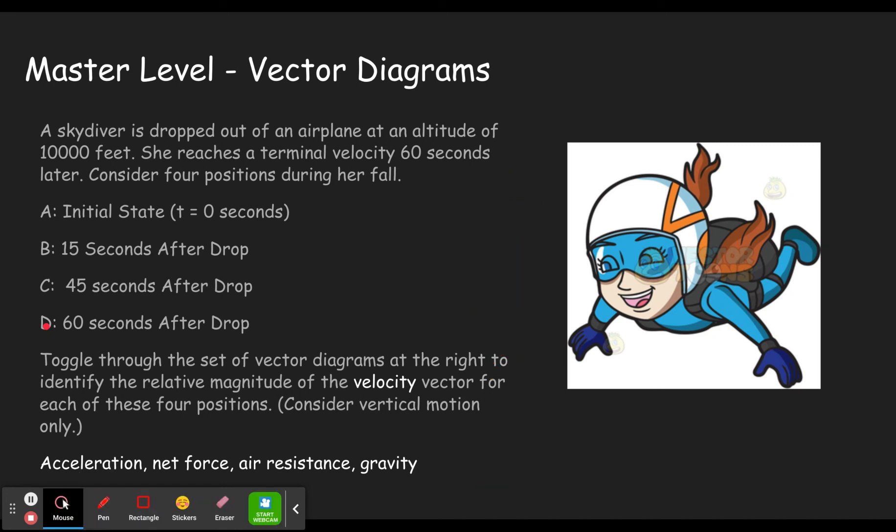Let's talk about this. So then at the bottom, it says toggle through the set of vector diagrams at the right to identify the relative magnitude of the velocity vector for each of these four positions. Well, each question, one is for the velocity vector. One is for the acceleration. One's for net force. One's for air resistance. One's for gravity. I actually threw in an extra one. So it's only four of those five that you'll see.